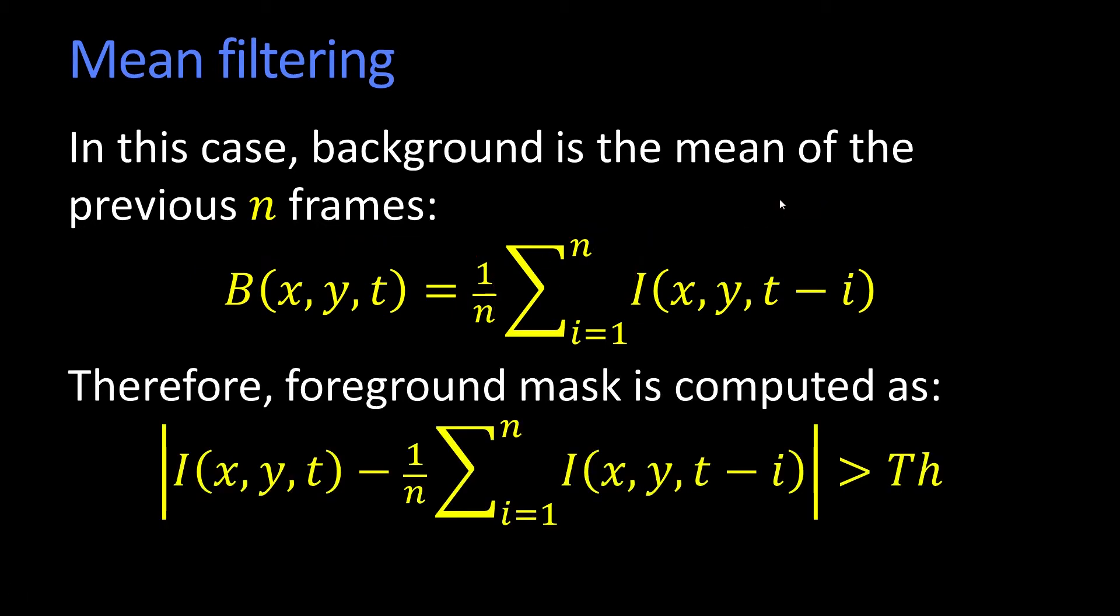In which case, my mask is now I take my current image, subtract off that mean, and then check is it greater than a threshold. Notice we now have a new parameter n - we have to worry about how much to average.